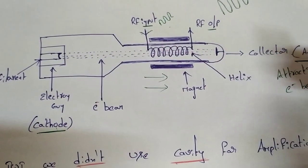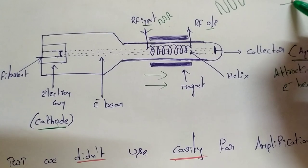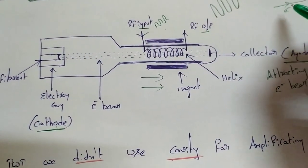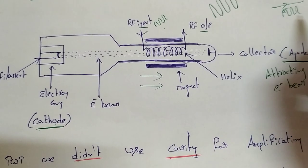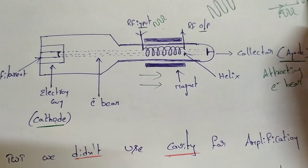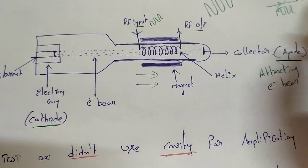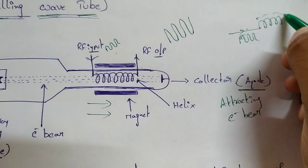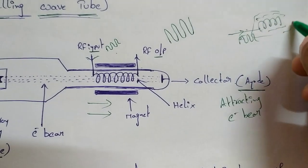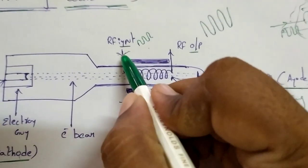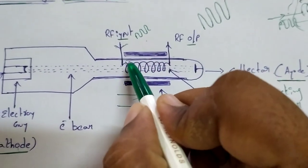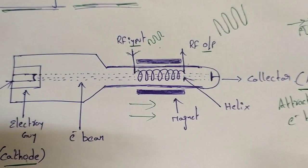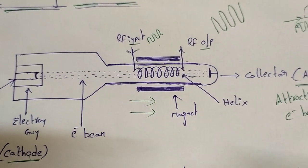When there is a current in a wire, there is an electromagnetic flow. In the RF signal, there is an electromagnetic component. This helix-shaped wire creates a magnetic field. The helix is surrounded by an RF field — a radio frequency field — created by the signal.